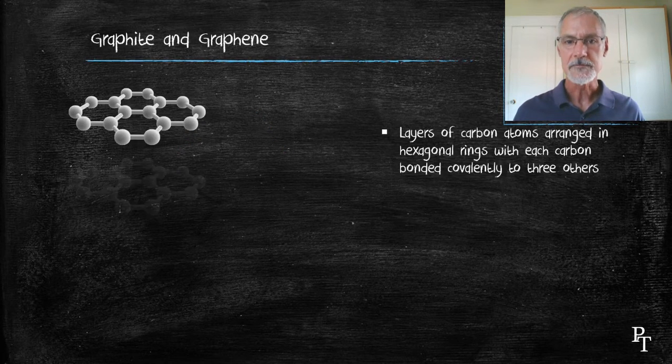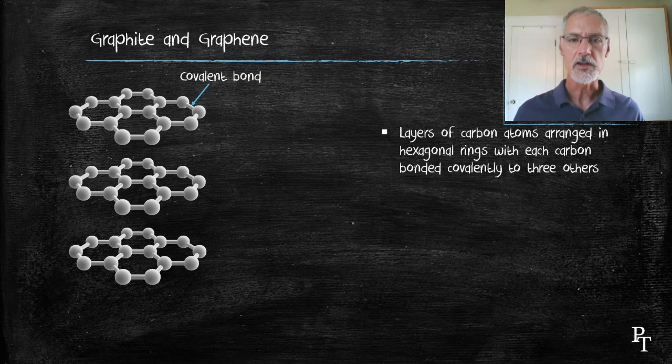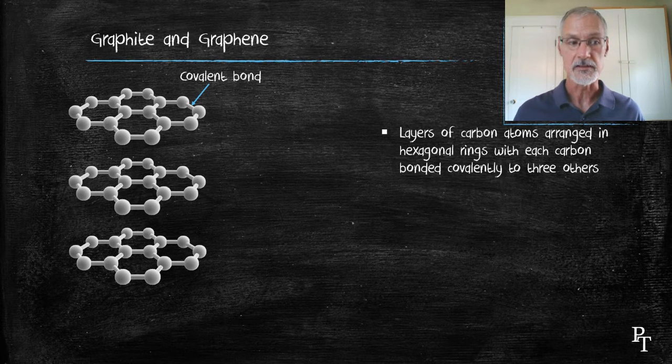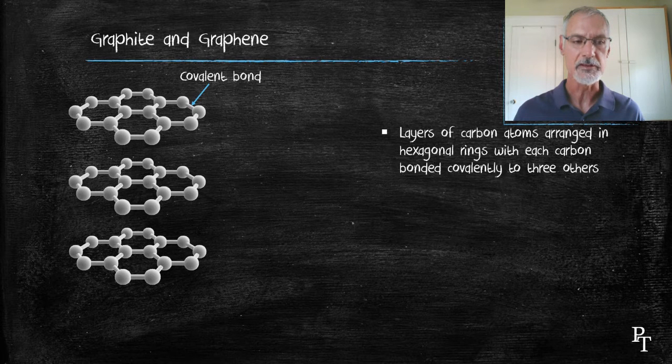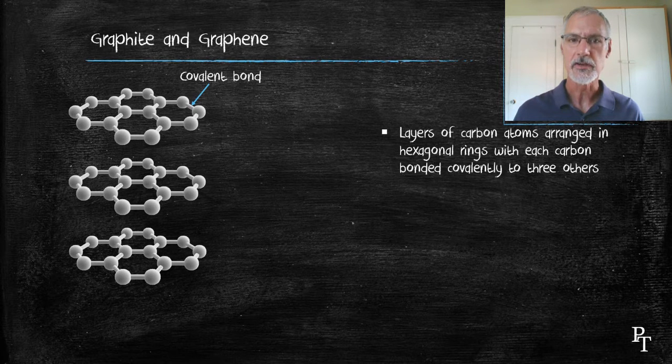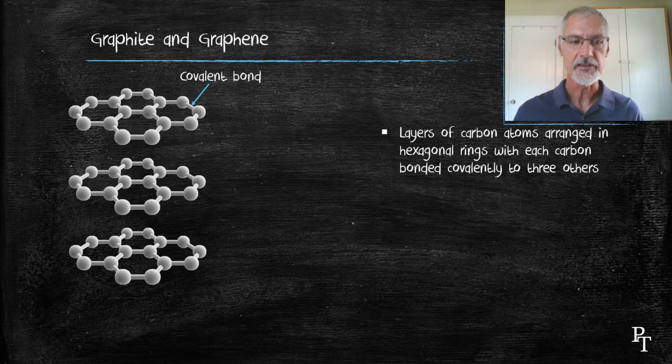Let's take a look now at graphite. Graphite, first of all, contains layers of carbon atoms. Each of these carbon atoms is bonded to three others, not four as in diamond. And as a result, it has a different shape. It forms these flat hexagonal rings.